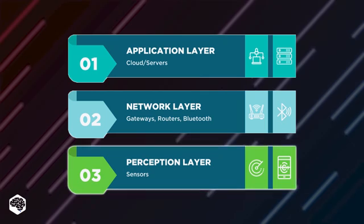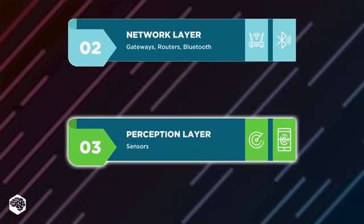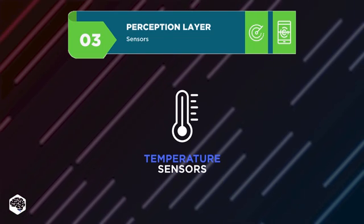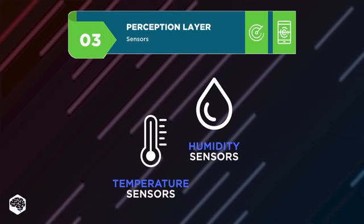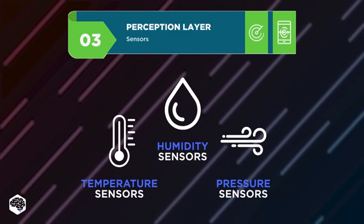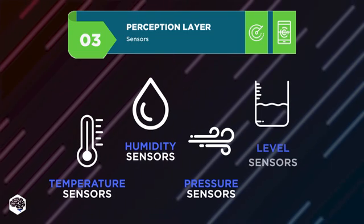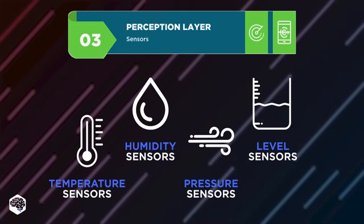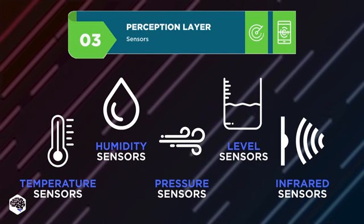The perception layer implies all types of sensors that can be used in IoT devices, namely temperature sensors that help control the temperature of water in household heating systems, humidity sensors widely used in HVAC systems, pressure sensors that help measure the flow of air or liquids, level sensors that gauge the number of liquids in tanks or gas in the air, and infrared sensors that can detect motion.